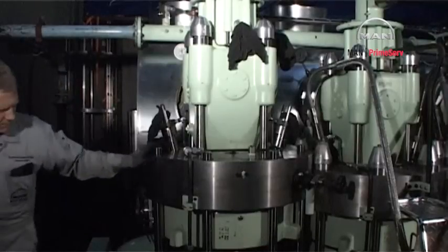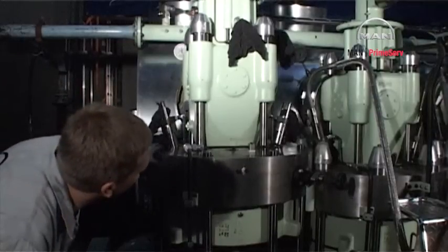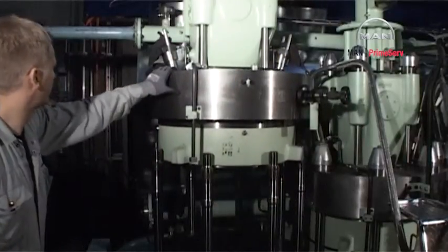Hook the engine room crane on the lifting attachment on top of the exhaust valve and lift away the cylinder cover.